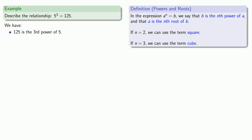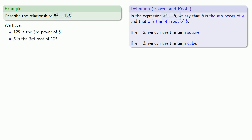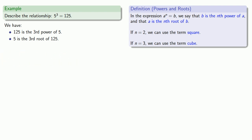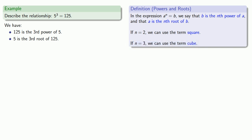Similarly, if a to power n equals b, we can say that a is the nth root of b. Comparing our expression to our definition, we could say that 5 is the third root of 125. And since n equals 3, we could use the term cube — so 125 is the cube of 5, or 5 is the cube root of 125.